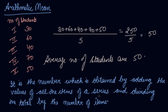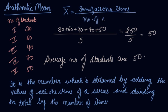So this is the arithmetic mean. The formula to calculate the arithmetic mean is: sum of all the items divided by number of items equals arithmetic mean. Arithmetic mean is denoted by x-bar. This is the sign and notation of arithmetic mean.